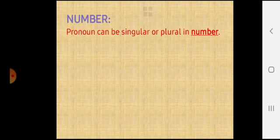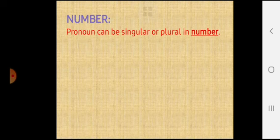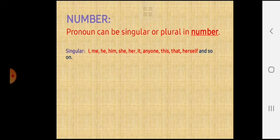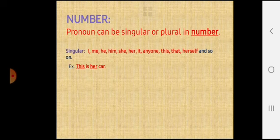Now let us see number. Like nouns, pronouns may be singular or plural. Singular includes the words I, me, he, him, she, her, it, anyone, this, that, herself and so on. For example, this is her car. In this sentence, this is telling about the car and her is telling about a single person.